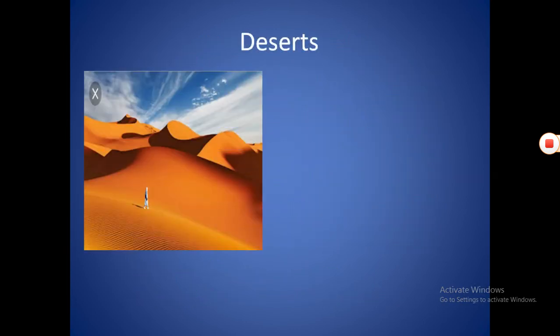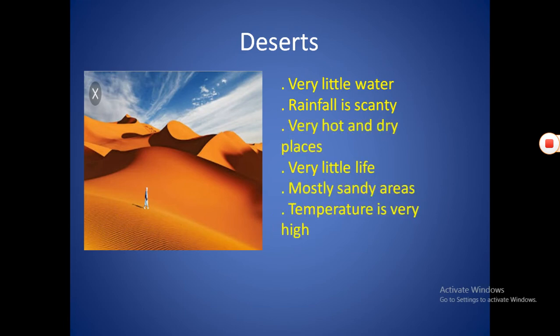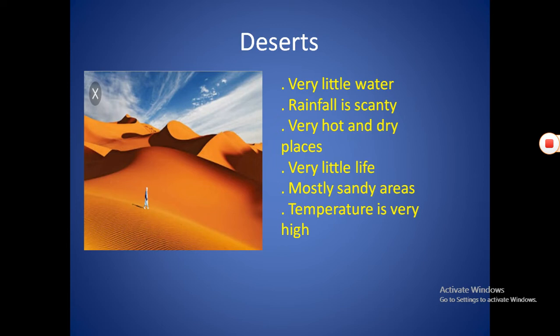Deserts. A desert is an area of land which has very little water. Rainfall is very less here — sometimes there is no rain at all for years. They are very hot and dry places and the temperature is very high. As a result, deserts support very little life; we can't find big trees or animals there.